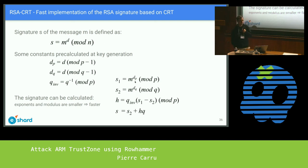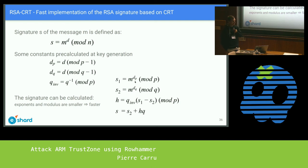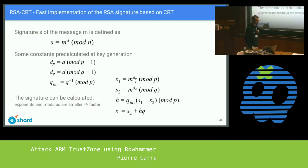Do you have an idea about the countermeasure? Yes — you just don't put critical stuff within the reach of Rowhammer, near the secure/non-secure border. Thank you again.